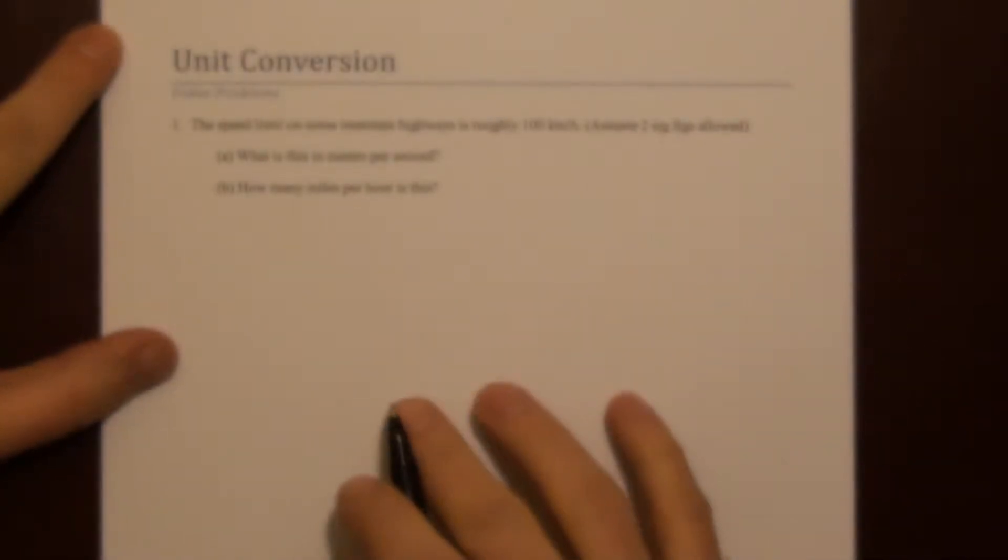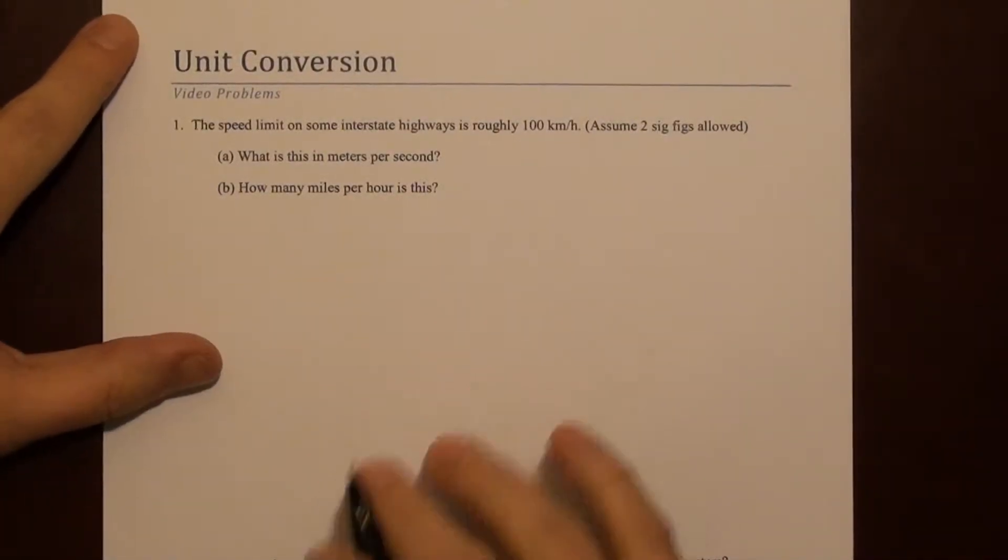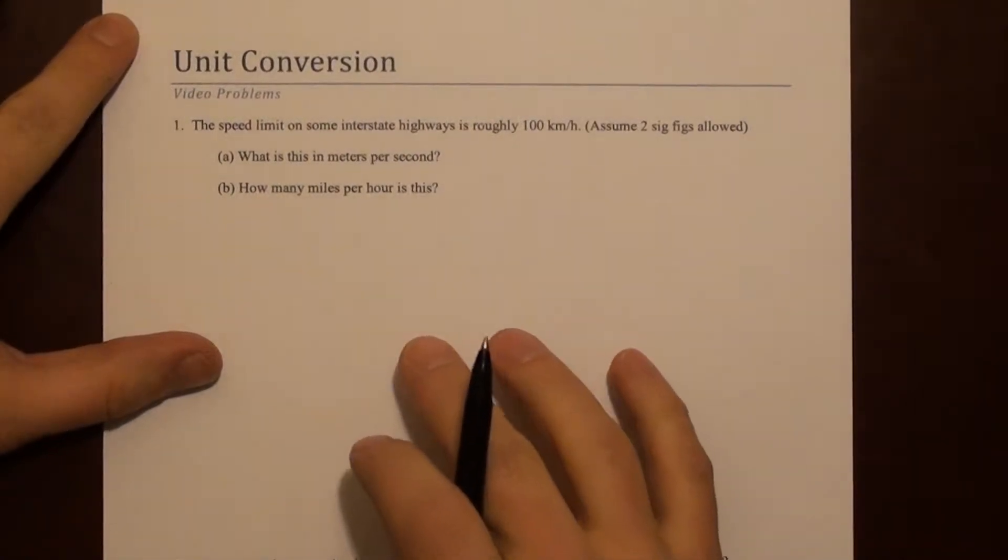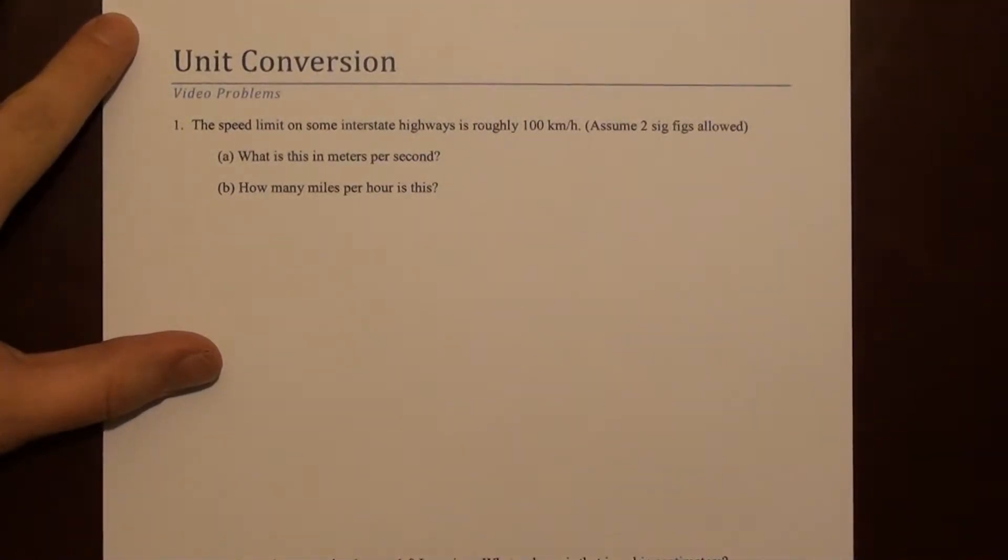This worksheet covers unit conversion. The first question here asks about the speed limit on some interstate highways, which is roughly 100 kilometers per hour. It asks us to convert this to a couple different units.